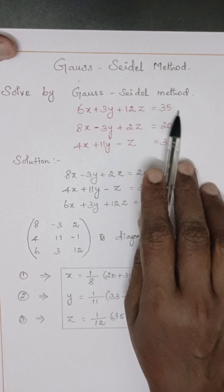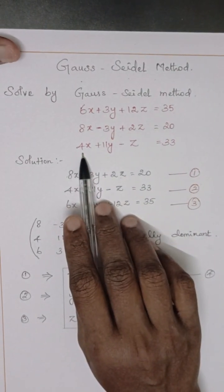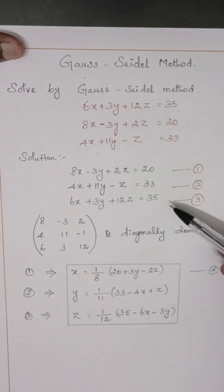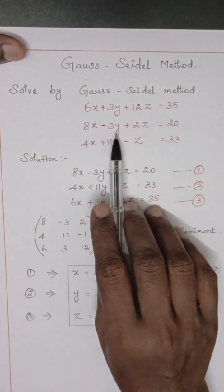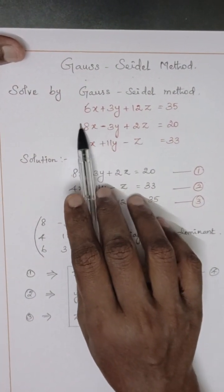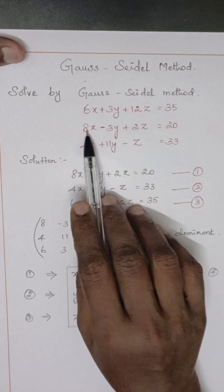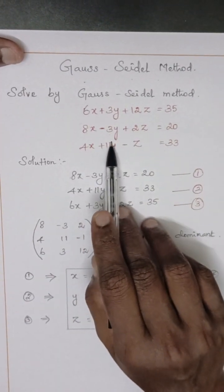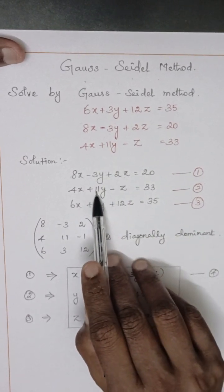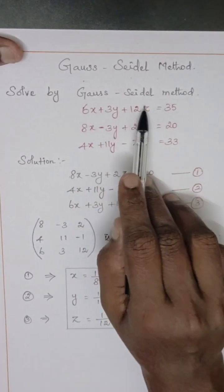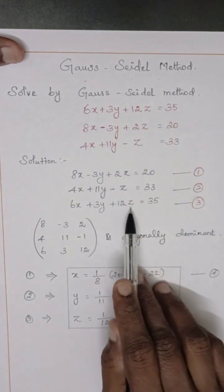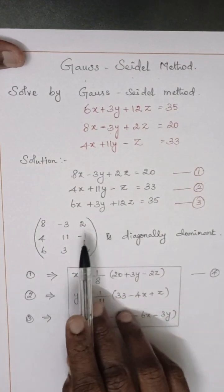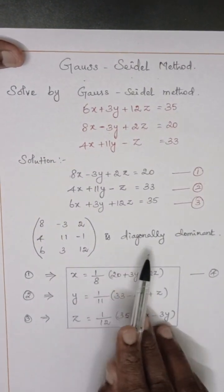First given equation is not diagonally dominant, so we have to rearrange. 8x minus 3y plus 2z - first element is greater, we choose in first equation. Second equation - coefficient of y is greater, so we take the second one. Third one, 12z is greater. Now the given equation is diagonally dominant.